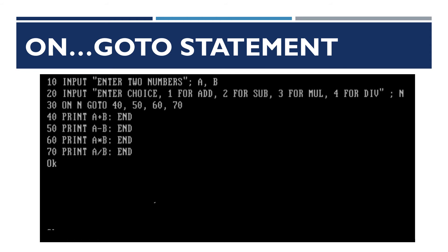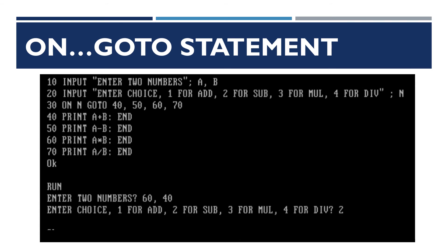In lines 40, 50, 60, and 70, all four arithmetic operations are written. After performing an operation, the program ends. When the program is executed, it asks for two numbers — I provided 60 and 40. Then it asks for a choice; I entered 2 for subtraction. The control transferred from line 30 to line 50, the second line in the row, and gave the answer after subtraction: 20.